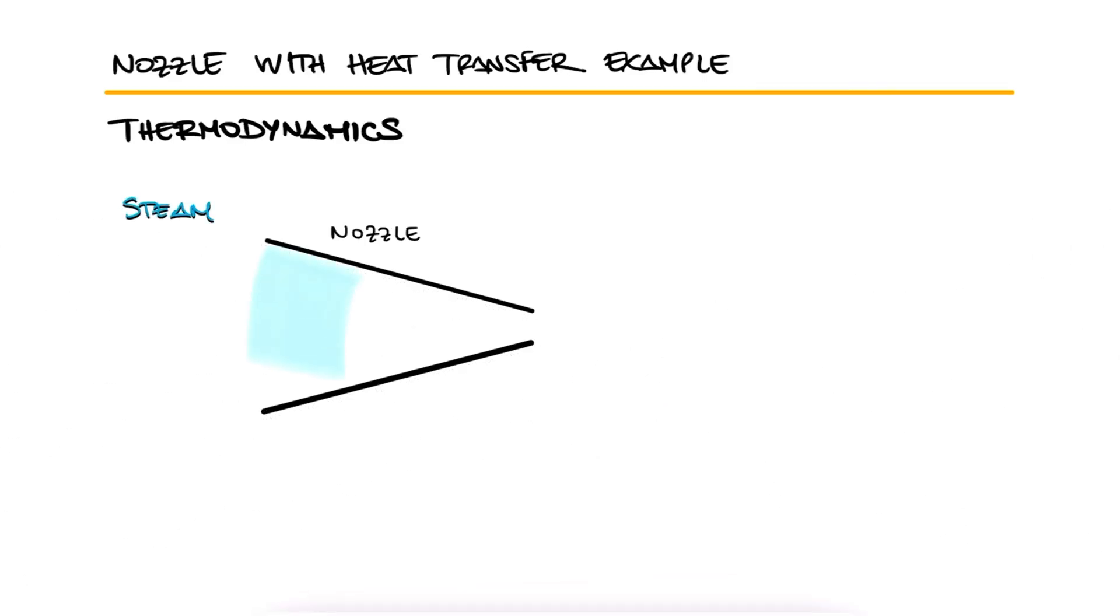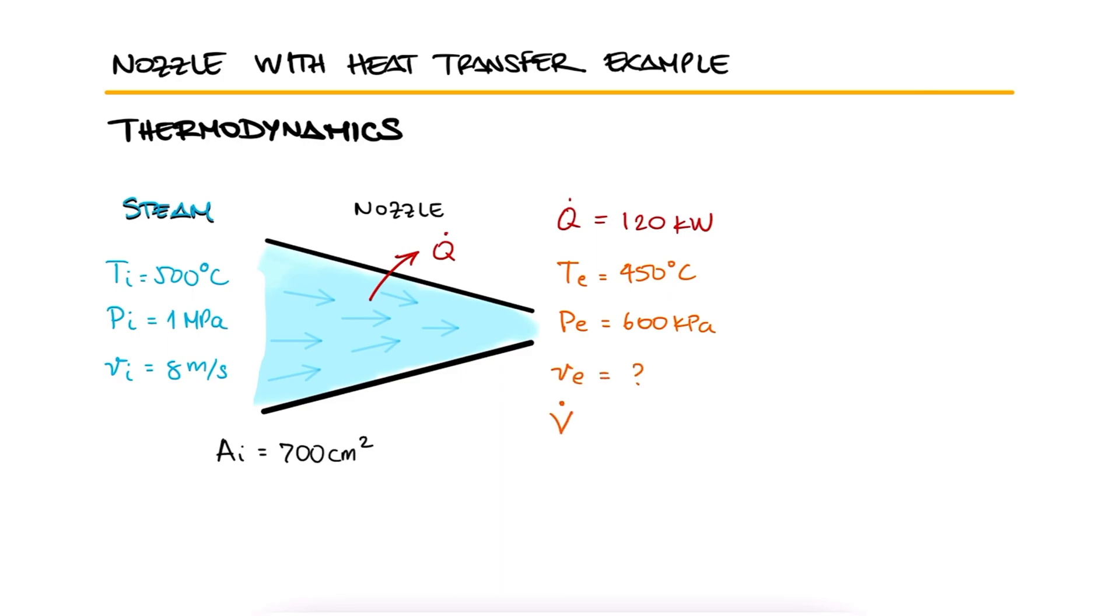Steam enters a nozzle at 500 degrees Celsius and 1 megapascal with a velocity of 8 meters per second and leaves at 450 degrees Celsius and 600 kilopascals while losing heat at a rate of 120 kilowatts. For an inlet area of 700 square centimeters, determine the velocity and the volumetric flow rate of the steam at the nozzle exit.